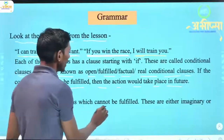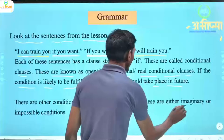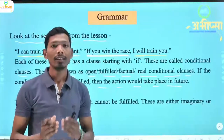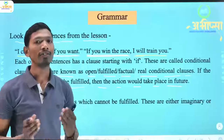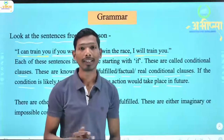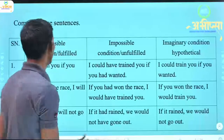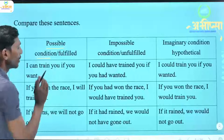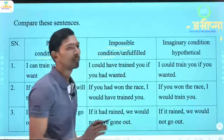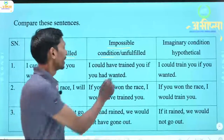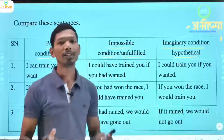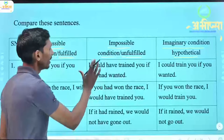There are other conditions which cannot be fulfilled. These are either imaginary or impossible conditions. Kuch conditions aisi bhi hoti hain jo future mein complete nahi hoti, fulfill nahi hoti. Toh jo next action hoti hai, wo bhi complete nahi hoti. Hum dekhenge kuch examples jis mein possible condition (sambhav), impossible condition (asambhav/unfulfilled), aur imaginary condition (hypothetical/sirf kalpana) hoti hai.